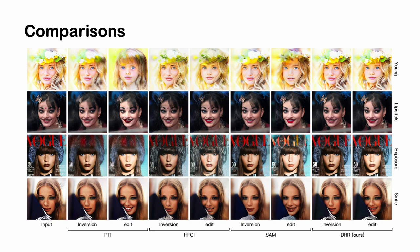Here are the comparisons with PTI, HFGI, and SAM. Although their inversion results are reasonable, editing capability degradation like decoration and occlusion blur occurs.